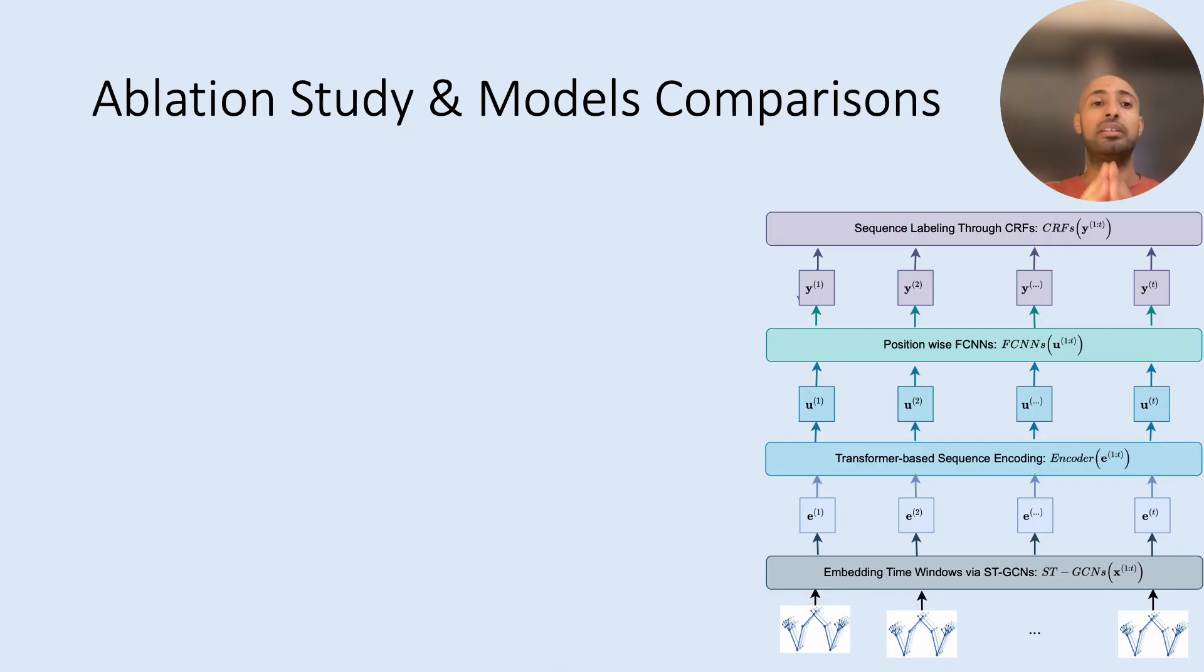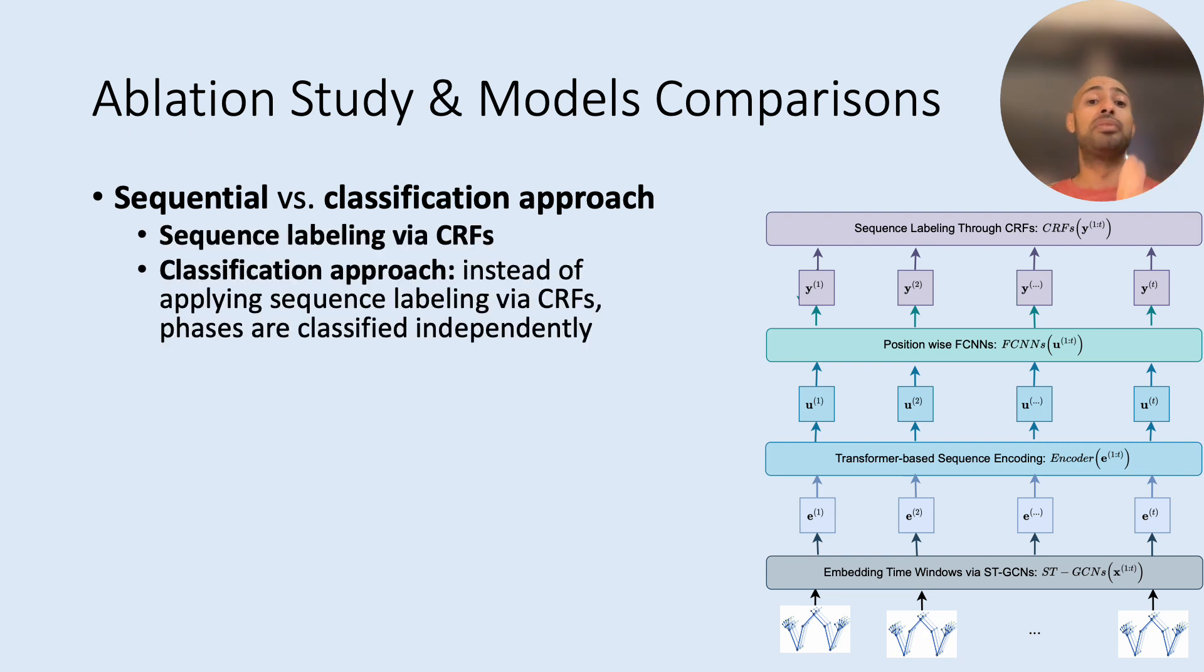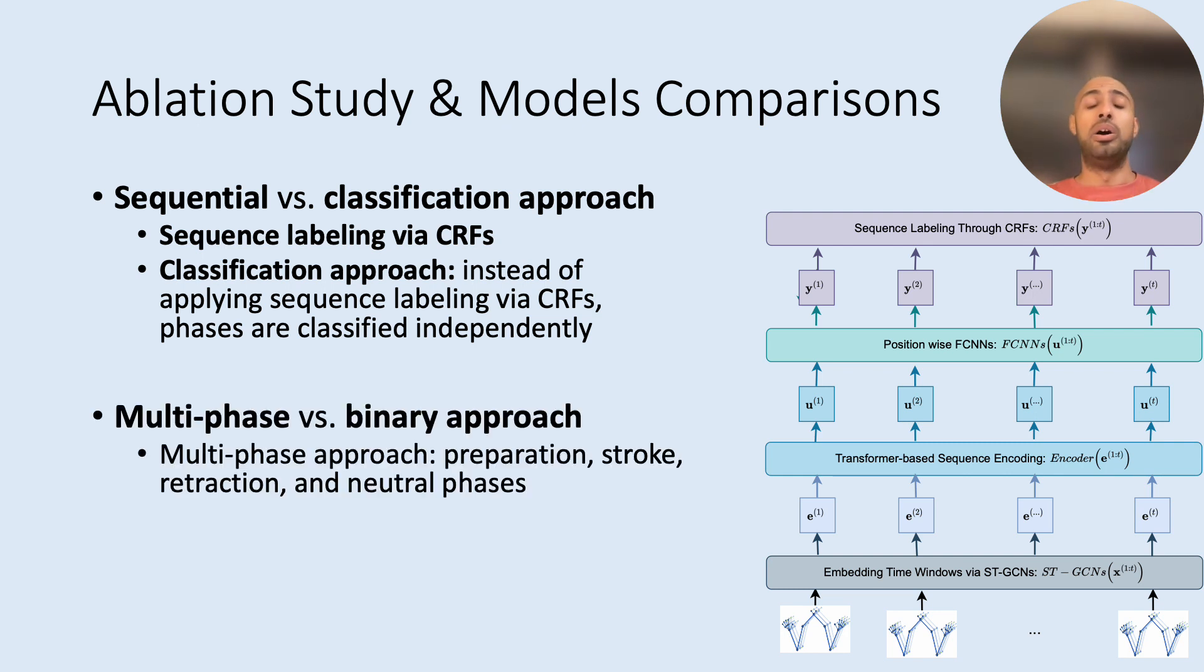So to test this proposition of multi-phase sequence labeling approach as an approach for gesture detection, we compare it with a classification approach where we classify each time window independently without making use of conditional random fields. We also compare it with another baseline where we are interested as in the literature in classifying whether a time window has a gesture stroke or not. So we have two ways to compare our proposition either with a classification approach or with a binary approach.